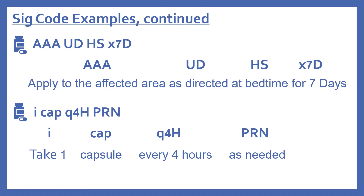A few more examples. 'AAA UD HS ×7D' means apply to the affected area as directed at bedtime for seven days. 'I CAP Q4H PRN' means take one capsule every four hours as needed — I is one, CAP is capsule, Q4H is every four hours, and PRN is as needed.